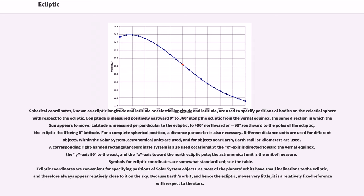A corresponding right-handed rectangular coordinate system is also used occasionally. The x-axis is directed toward the vernal equinox, the y-axis 90 degrees to the east, and the z-axis toward the north ecliptic pole. The astronomical unit is the unit of measure. Symbols for ecliptic coordinates are somewhat standardized. See the table.